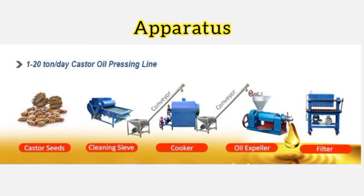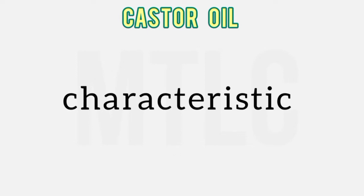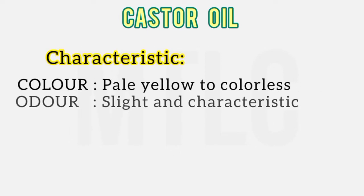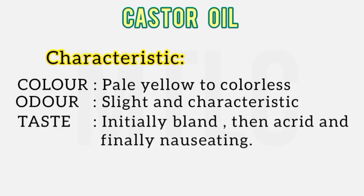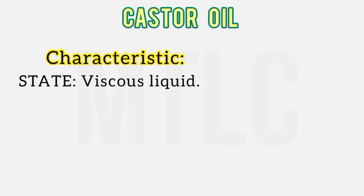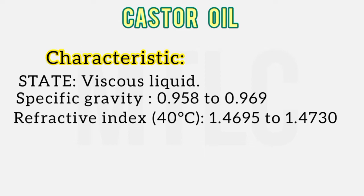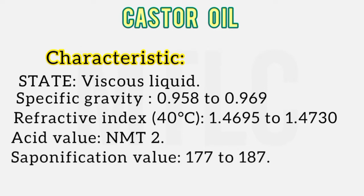Here is a picture of the apparatus and the decorticated seed. The characteristics of castor oil: the color is pale yellow to colorless, with a slight characteristic odor. The taste is bland, slightly acrid, and nauseating. It is soluble in absolute alcohol in all proportions and is a viscous liquid. Specific gravity is 0.958 to 0.969. Refractive index is 1.4695 to 1.4730. Acid value is 2, saponification value is 177 to 187, and acetyl value is around 150. These values help identify the oil and detect adulterants.